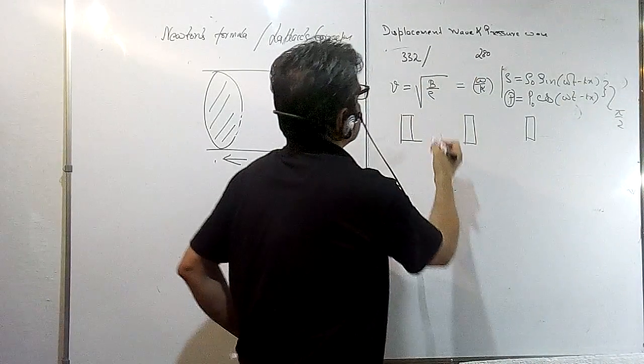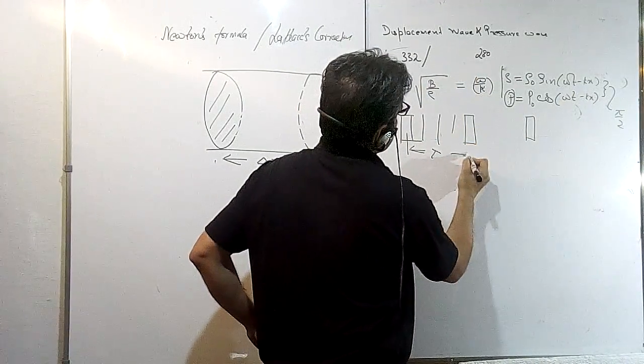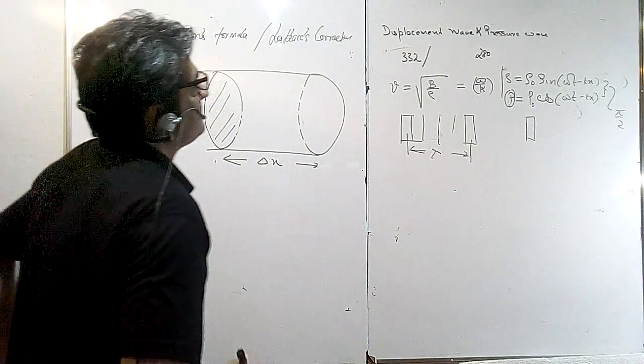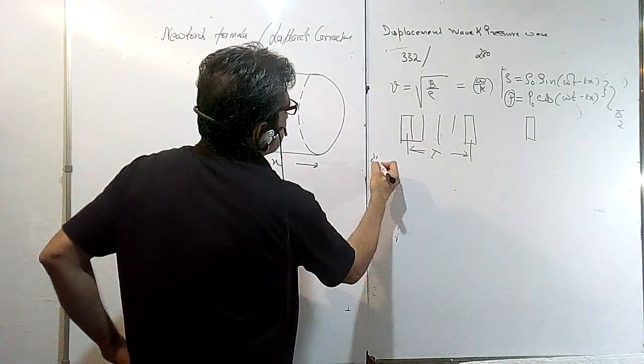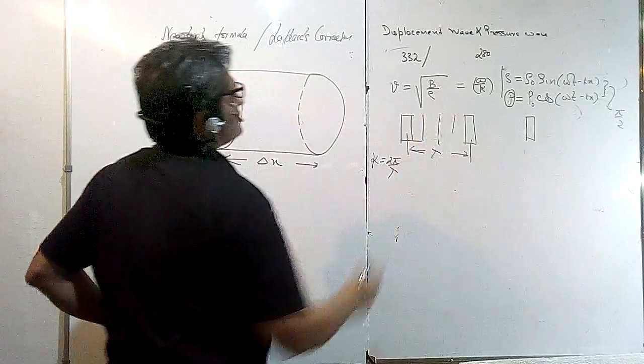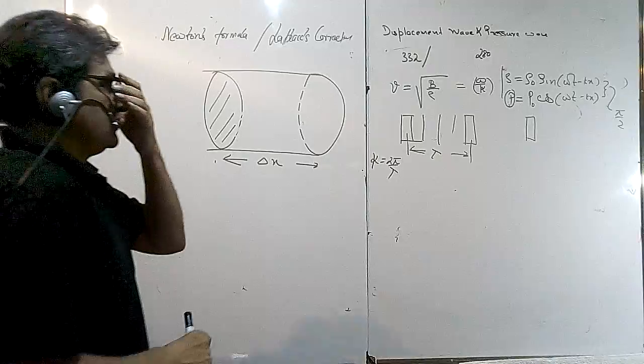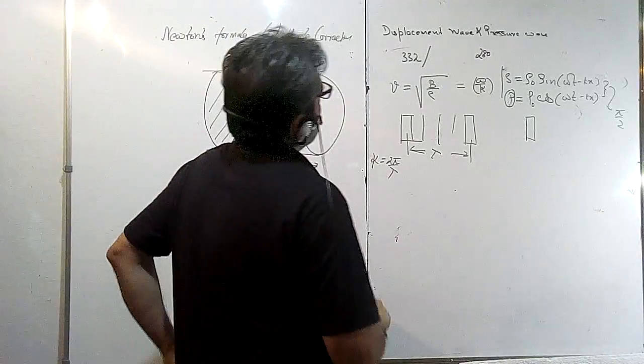The wave is traveling like this: compression, and this is the rarefaction area. The wavelength—I'm just repeating basic things—this is the wavelength of the wave, and k is the wave number which is 2π upon lambda, and wave velocity as I've shown is omega upon k. These are the basic things based on which I am going to start.